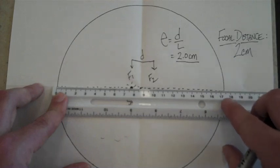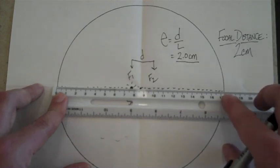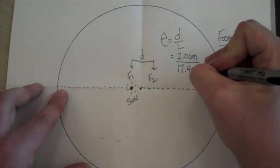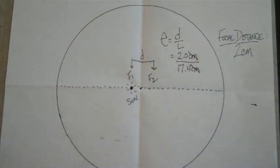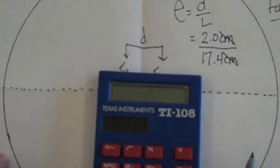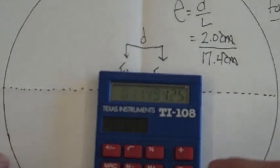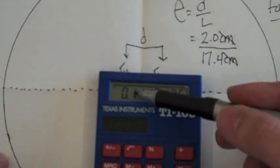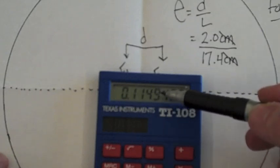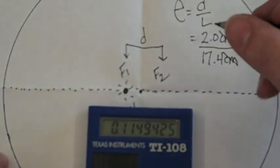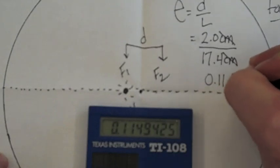So it looks like, and you always want to go to the nearest tenth of a centimeter, this is going to be about 17.4 centimeters. Centimeters cancel out. There's no units with eccentricity. Let's take your calculator. 2 divided by 17.4. That's going to give me an eccentricity of 0.1149425. You always go to the thousandths place. But remember your rounding rules. The 9 in the ten thousandths place is going to make that 4 into a 5. So my eccentricity on this ellipse is 0.115.